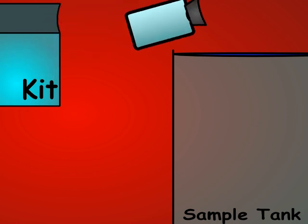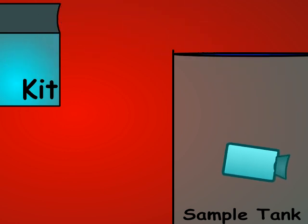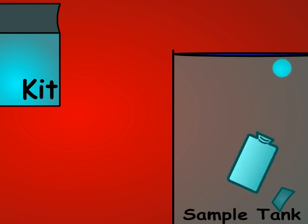Submerge the water sampling bottle underneath the surface of the water. Then remove the cap and allow the bottle to fill. Be sure to tilt the bottle at an upright angle to allow the air inside to escape.